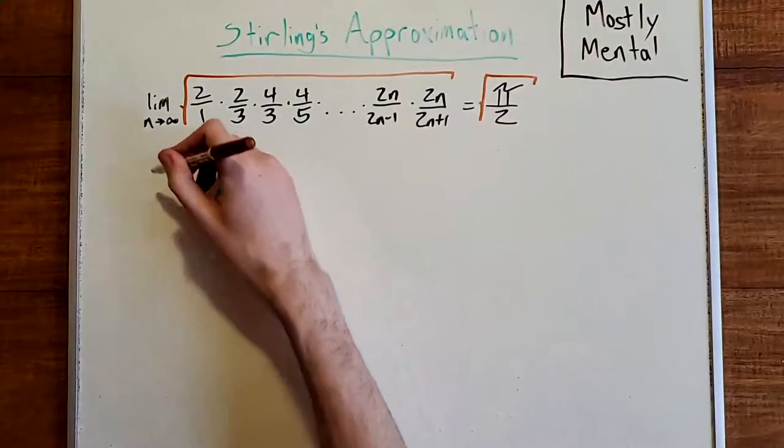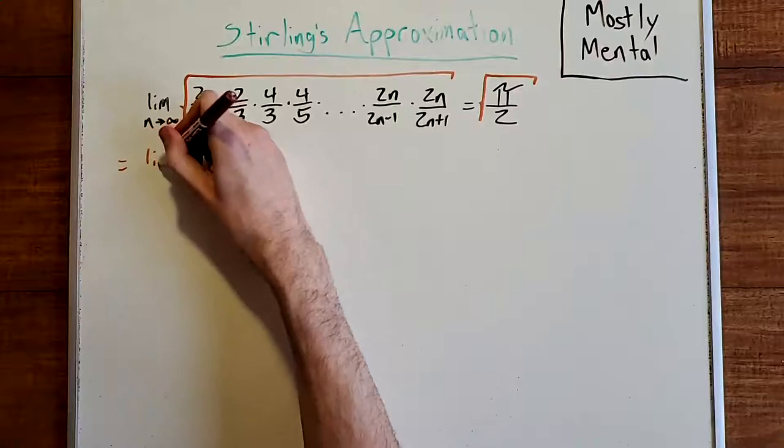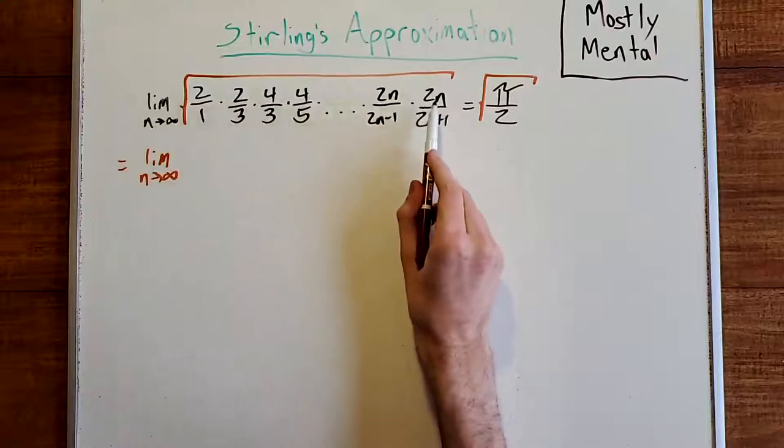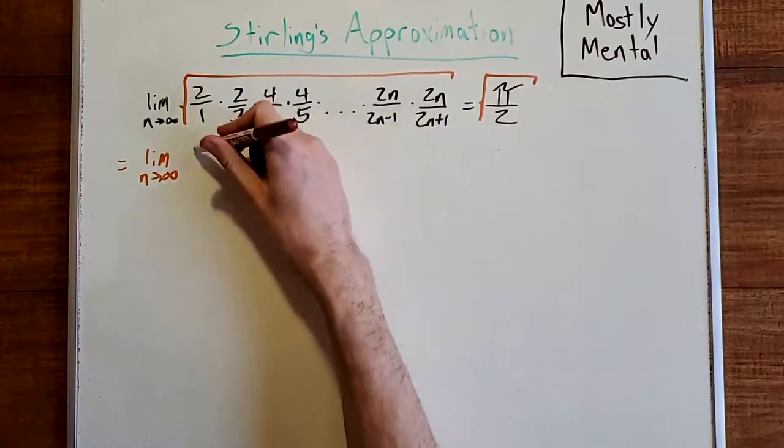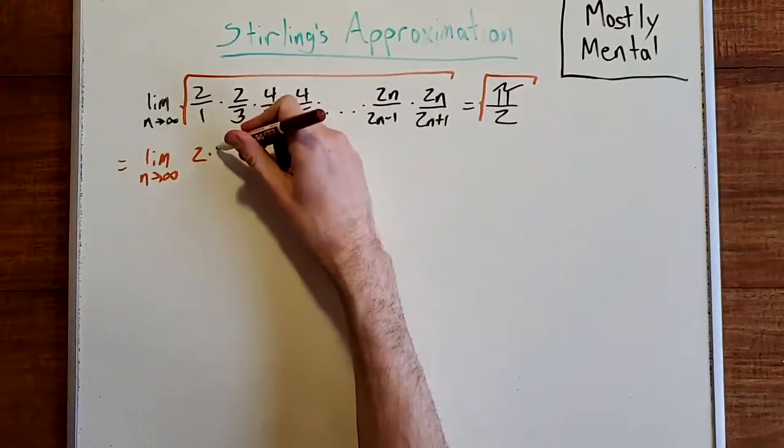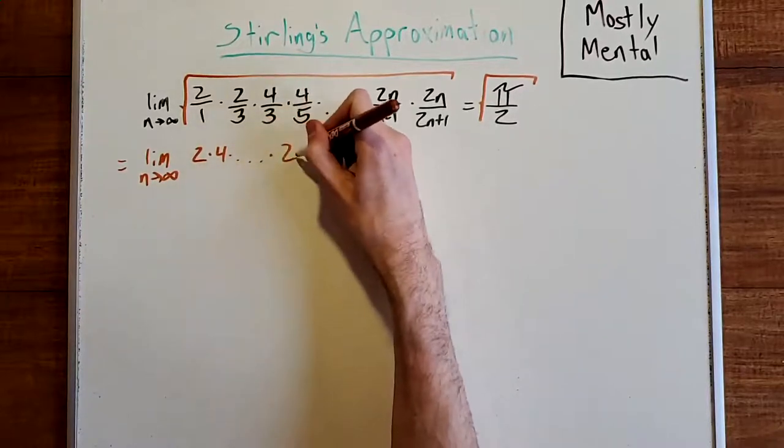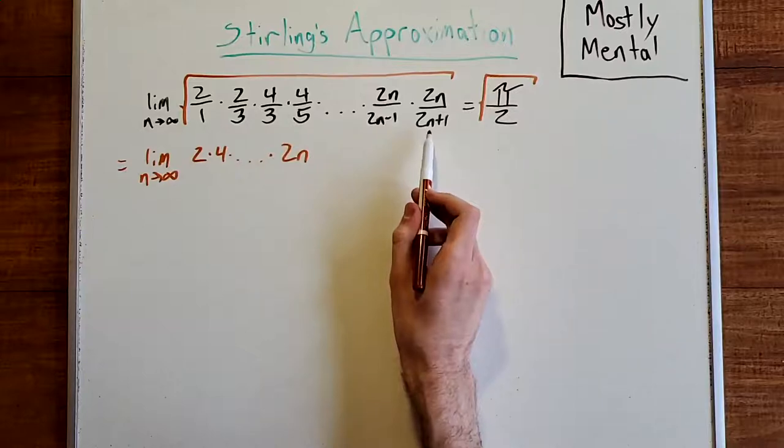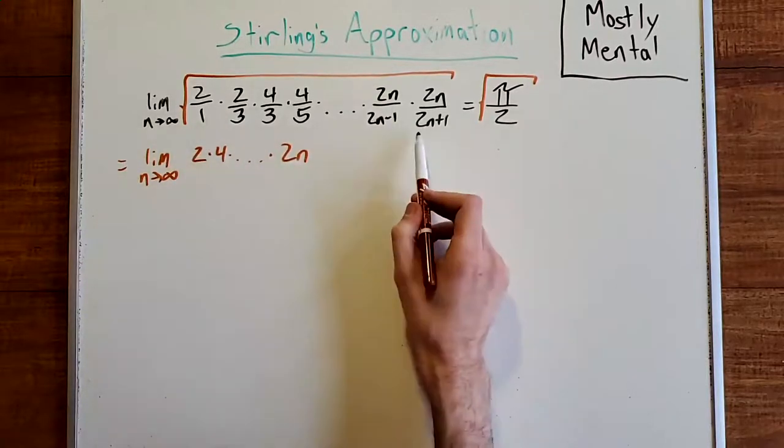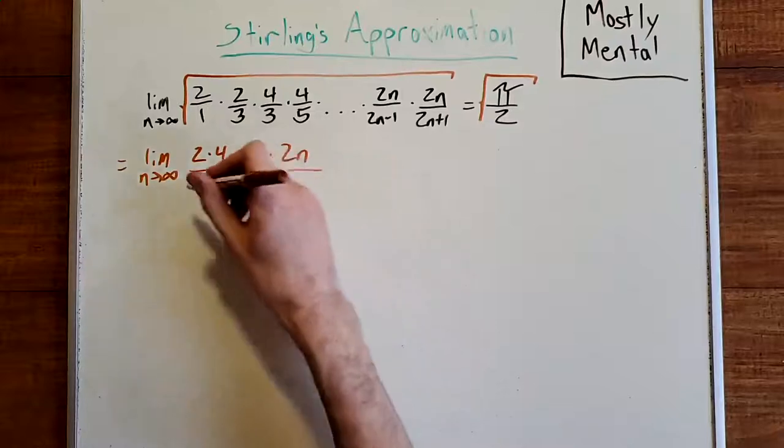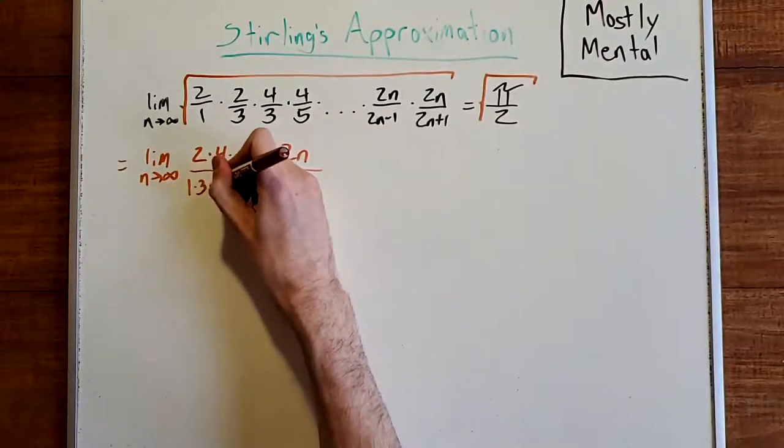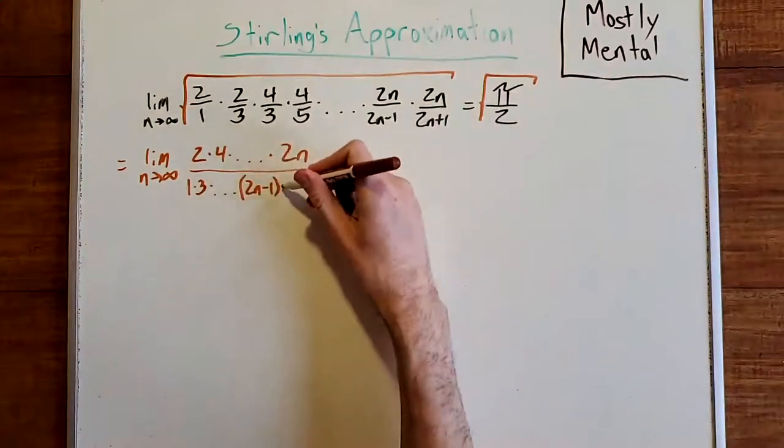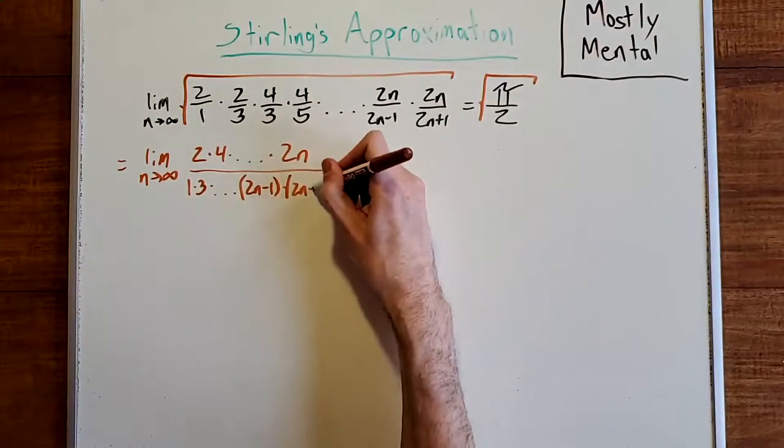And if we do, we end up with, once again, the limit as n approaches infinity. And notice that every term in the numerator is repeated. So in our numerator, we end up with 2 times 4 and so on up to 2n. And every term in our denominator is repeated except for 1, which is its own square root, and 2n plus 1. So we get 1 times 3 and so on up to 2n minus 1 times the square root of 2n plus 1.